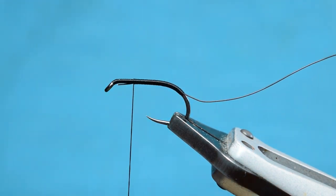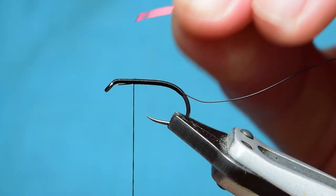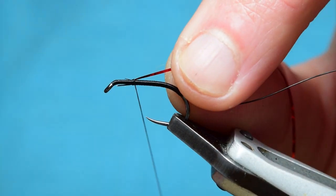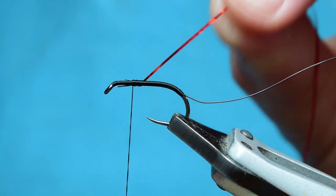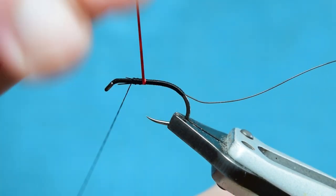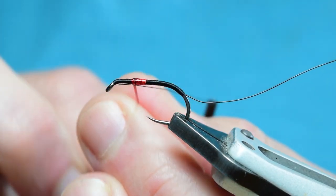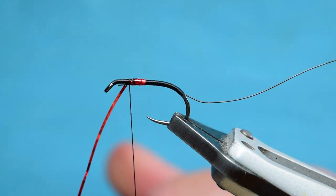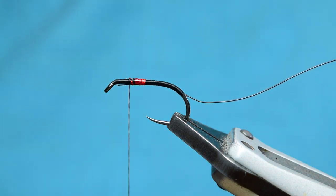Next stage is you're going to use some red holographic tinsel. You're going to tie this in on the side and just run your thread backwards slightly. This gets like a little bit of a taper in your fly as well. Then just grab your holographic tinsel and just wind this forward. Very simple. Just catch it in with a couple of turns and trim off the excess. Very easy, very simple.